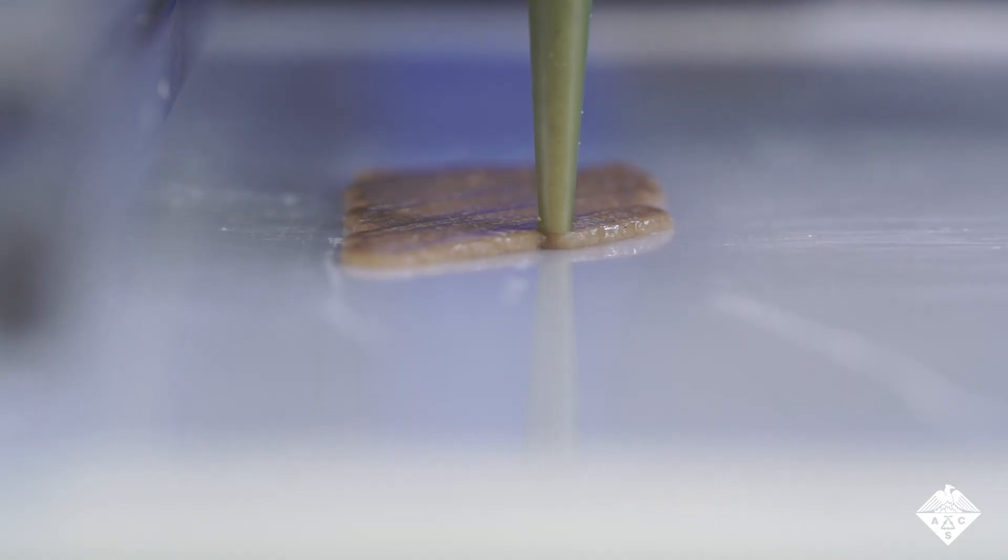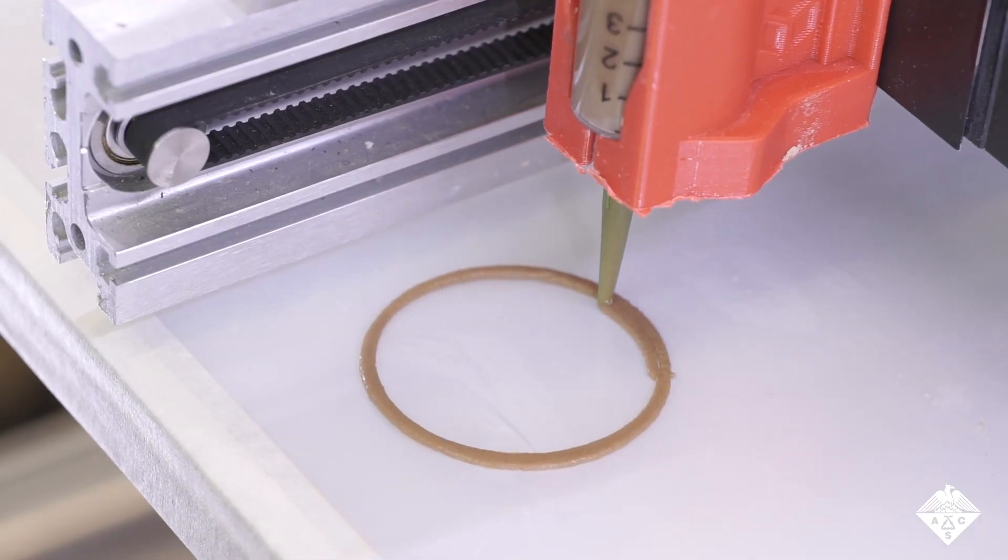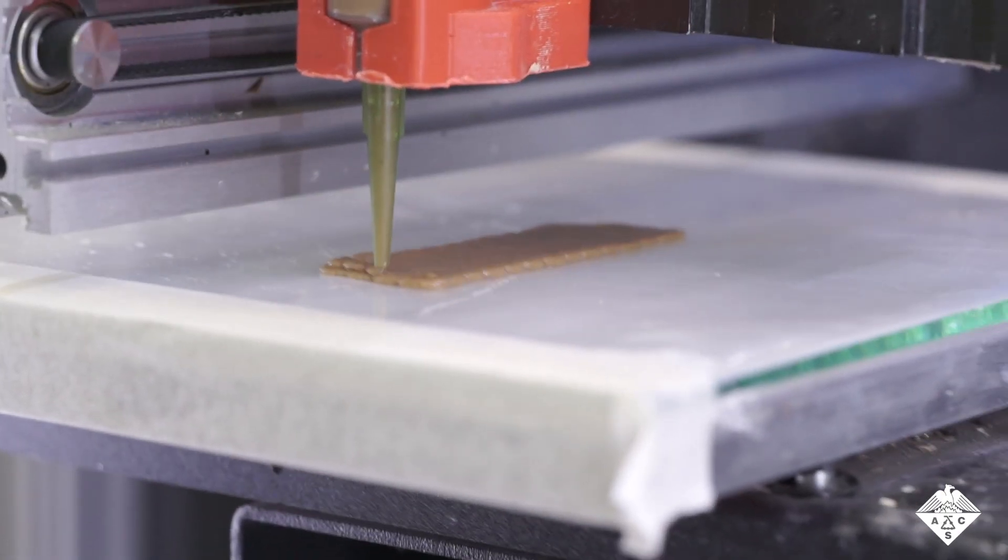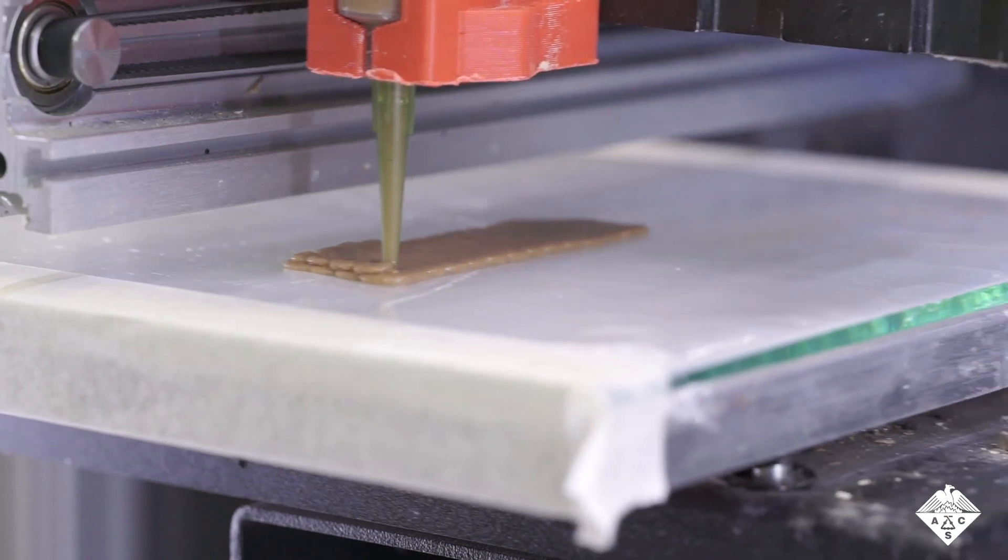The ink is then loaded into a 3D printer and extruded into a pathway, which is the way the ink is laid down. Along with the pathway, stacking multiple layers of printed patterns dictates the morphing behavior as the structure dries.